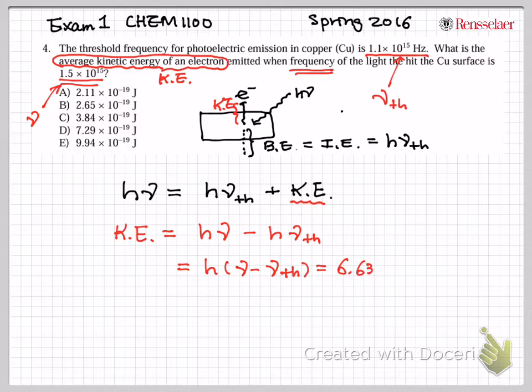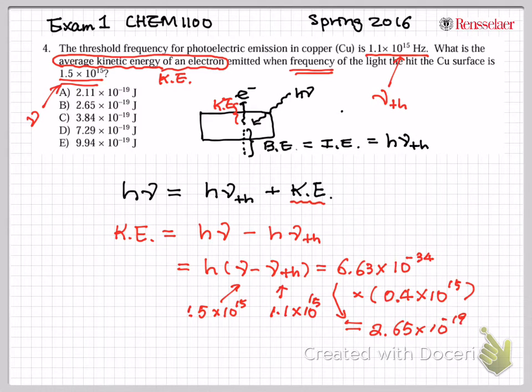And you just have to plug in the numbers. So 6.63 times 10 to the minus 34, and then multiply by, what was my nu? Now this one is 1.5, 15. This is 1.1 times 10 to the 15. So this is therefore 1.4 times 10 to the 15. And then if you do this calculation, you will get 2.65 times 10 to the minus 19 joule. So 2.65 times 10 to the minus 19 joule. This is the answer.